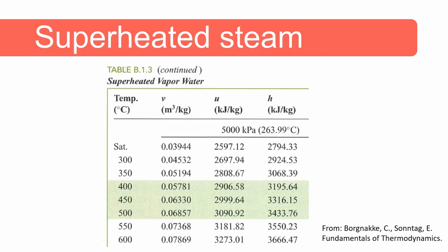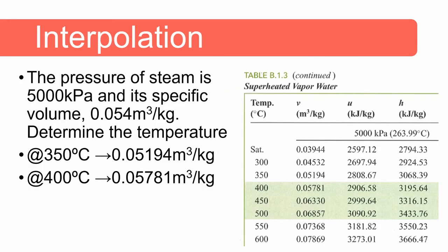Let's do an example of one of these cases now. For this case the pressure of steam is 5000 kilopascal and its specific volume is 0.054 cubic meters per kilogram. The question asks you to determine the temperature. If you look at the table specifically the specific volume column you can see that the value given for specific volume of 0.054 cubic meters per kilogram falls between these two values here. Meaning that the temperature that the question asks for is between 350 and 400 degrees Celsius and we need to use interpolation to get the exact value.